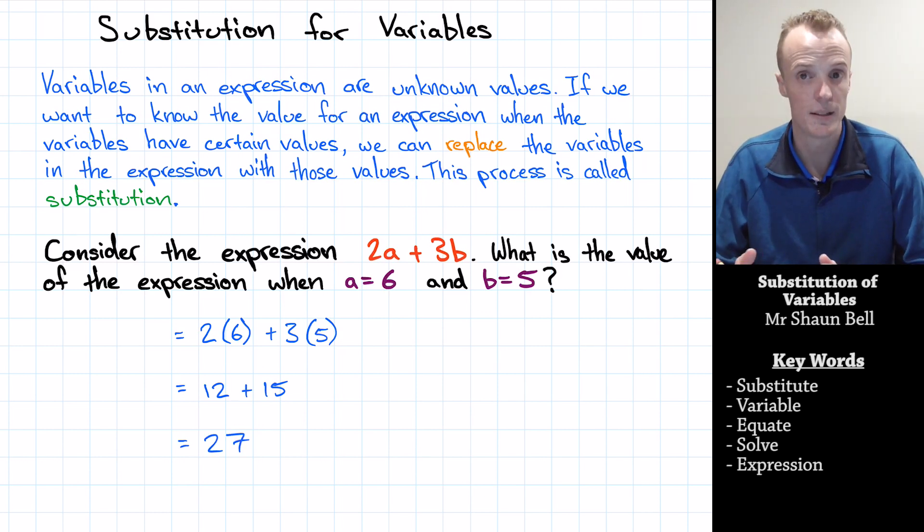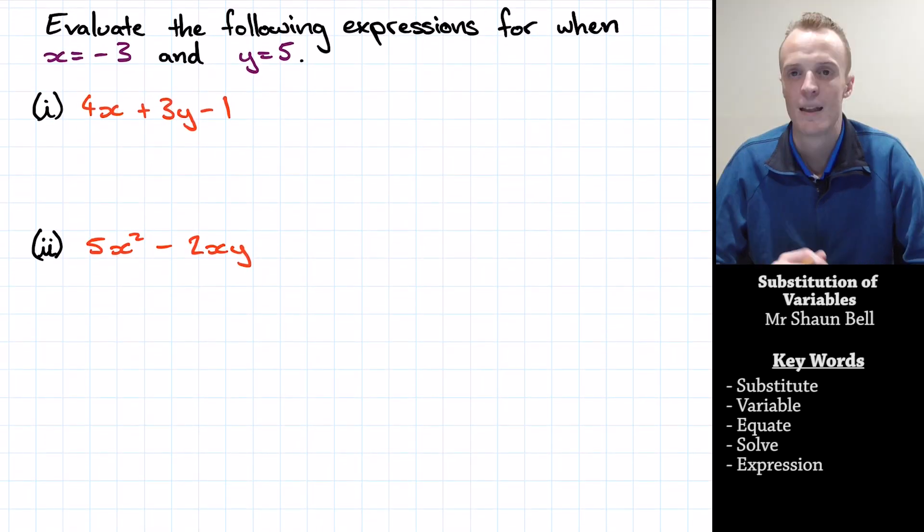Therefore, when a equals 6 and b equals 5, that expression equals 27. Let's take a look at another couple of examples. Here, I've been given two expressions that contain the unknowns of x and y. And I've been asked to evaluate them or find out what they equal when x equals negative 3 and y equals 5.